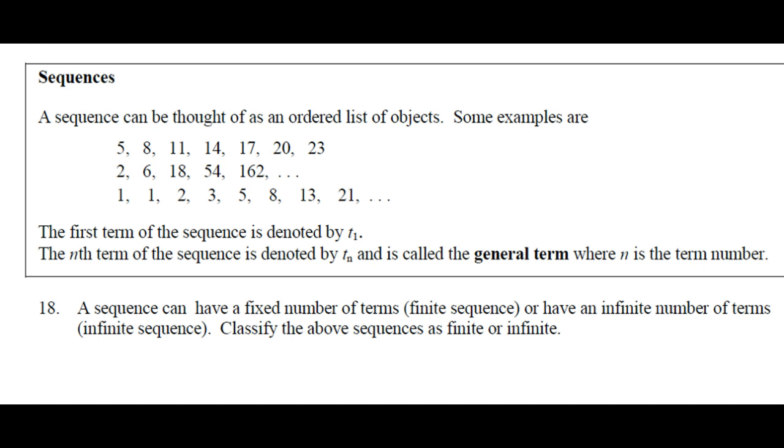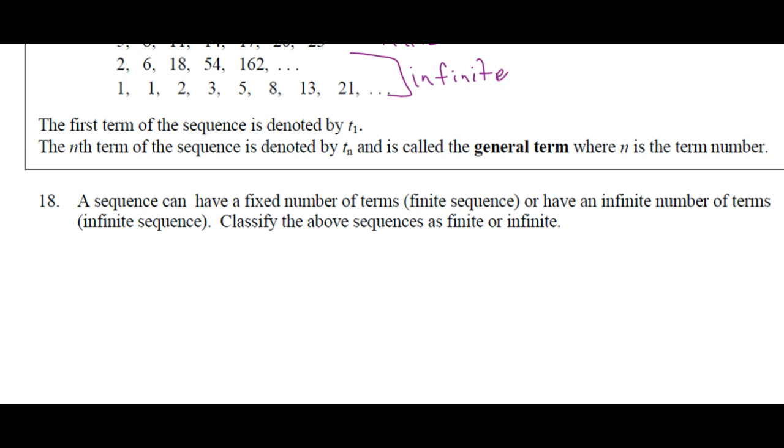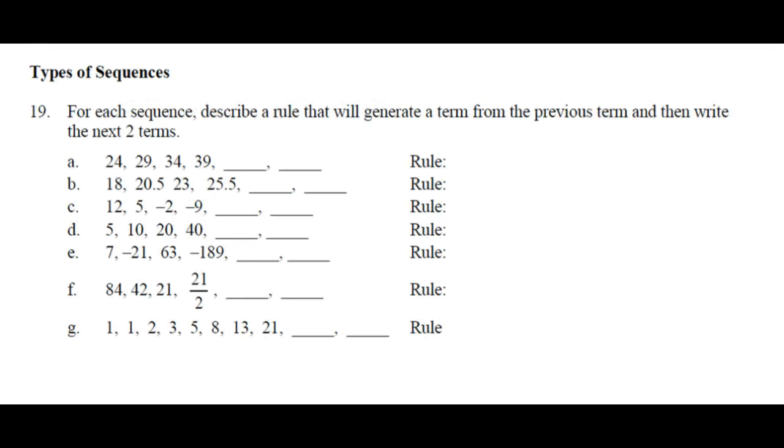A sequence can have a fixed number of terms, call that finite, or have an infinite number of terms, we call that infinite. Classify the above sequences as finite or infinite. Finite ends, so finite. Is this finite or infinite? Finite. Both of these are infinite, right? What tells us that it's infinite? The ellipsis. Sometimes the ellipsis appears in the middle. I can write 1, 2, 3, dot dot dot, comma, 99, comma, 100. And then I'm saying, well, I want you to continue along this way.